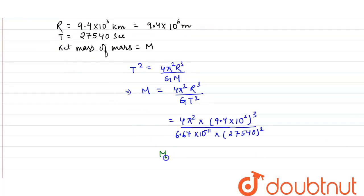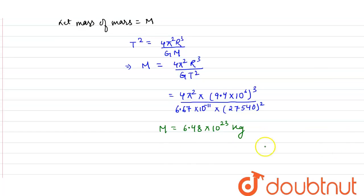...we will get the mass of Mars and it will come as 6.48 × 10²³ kg, or what we can say the mass will be 6.5 × 10²³ kg, okay. So this is our required answer.